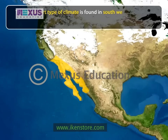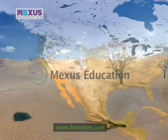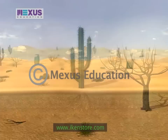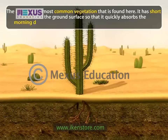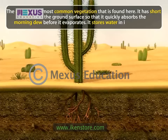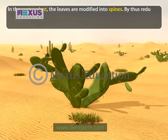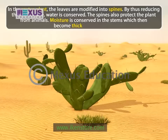The hot desert type of climate is found in southwest USA and the adjoining Mexican desert. Winters are cool and summers are hot with very little rain. The hot and dry conditions allow very little vegetation to grow. The cactus is the most common vegetation found here. It has short roots near the ground surface so that it quickly absorbs the morning dew before it evaporates. It stores water in its fleshy stem. In the cactus plant, the leaves are modified into spines, reducing the leaf surface to conserve water. The spines also protect the plants from animals. Moisture is conserved in the stems which become thick and succulent.